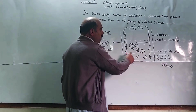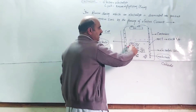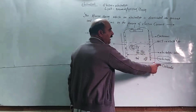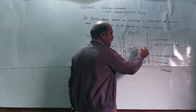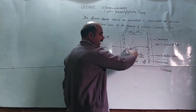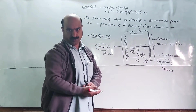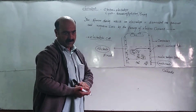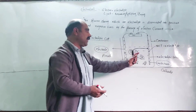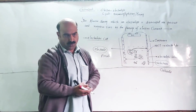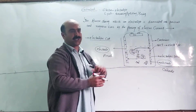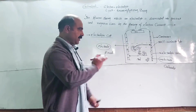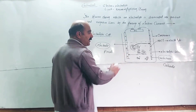Negative ions will move towards the anode, and positive ions will move towards the cathode. The cathode is the negative plate and the anode is the positive plate. The ions move to their respective oppositely charged electrodes and then react. We will now look at the ionization reaction.